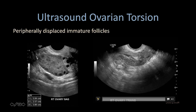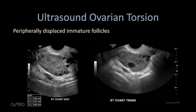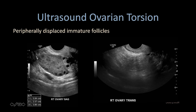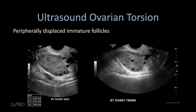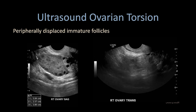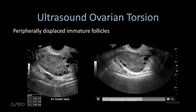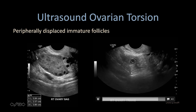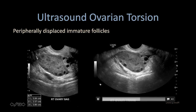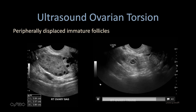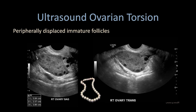Oftentimes there will be multiple tiny peripheral cysts within the ovaries. Frequently these cysts are homogeneous in size and considered immature in appearance. Here you can see on this sweep image of the ovary multiple small cysts — this is oftentimes referred to as the string of pearls sign of the ovary.